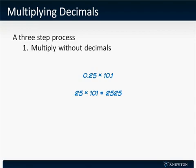So, imagine that we have 0.25 times 10.1. We'll multiply these numbers as if they had no decimals, 25 times 101. This is 2,525.